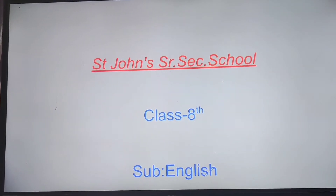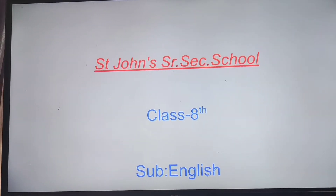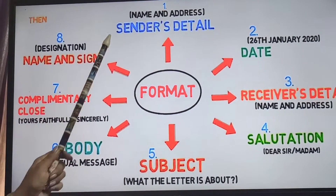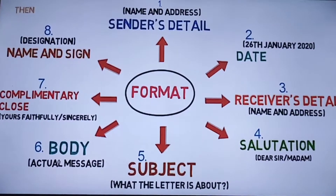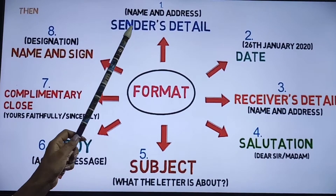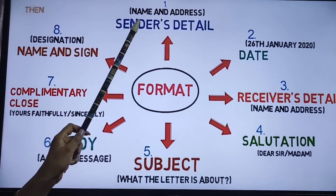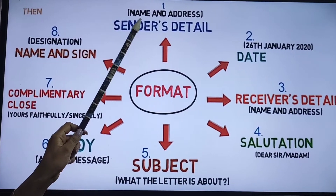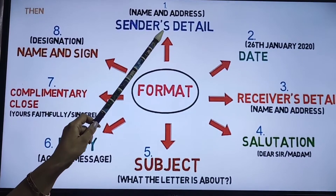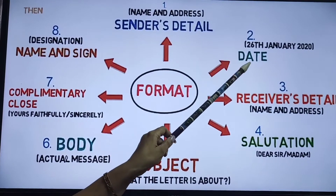A formal letter must have 8 points in it. First thing is sender's address. You have to write down your address and name here. Second is date.